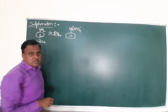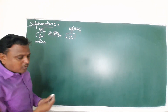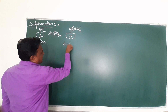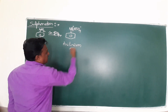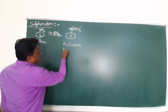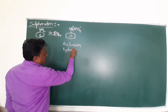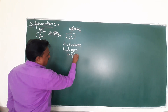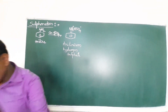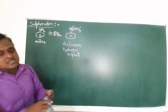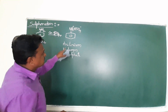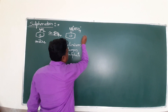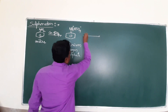This salt is called anilinium hydrogen sulfate. Anilinium hydrogen sulfate is a compound or salt. After this, it is strongly heated at 453 to 473 Kelvin temperature.